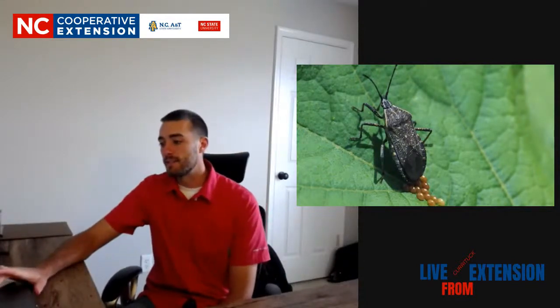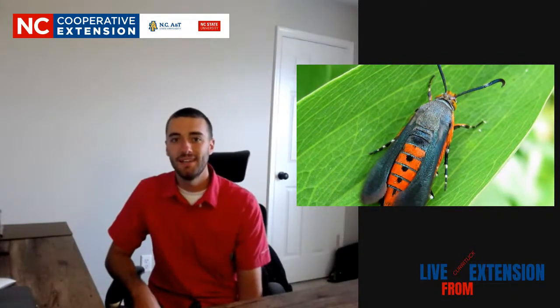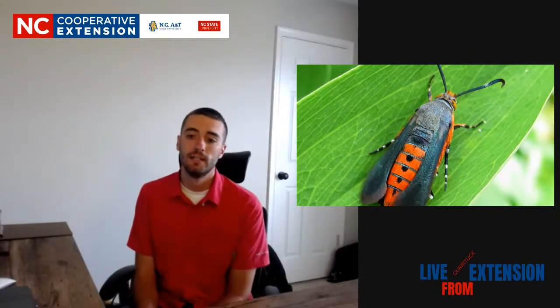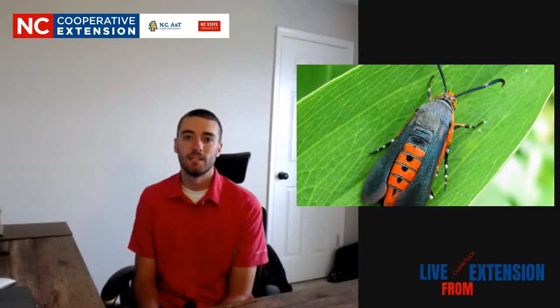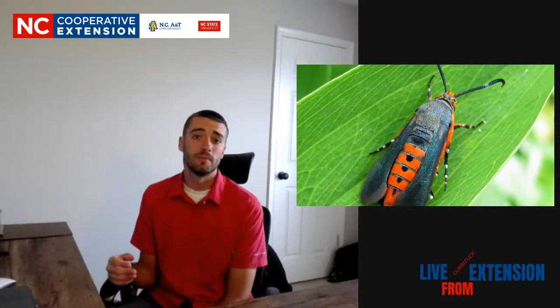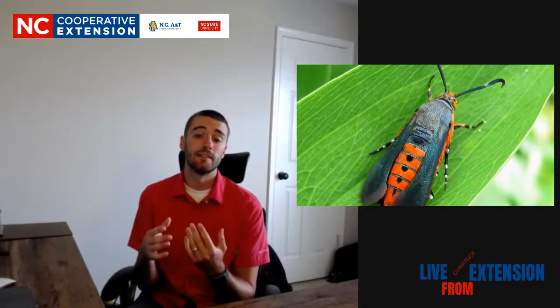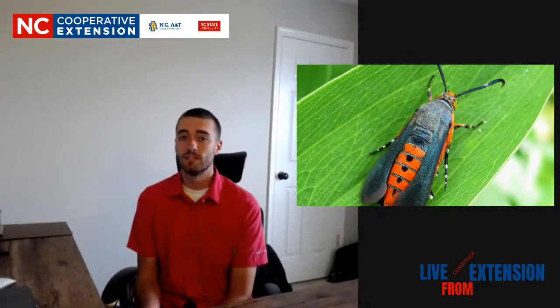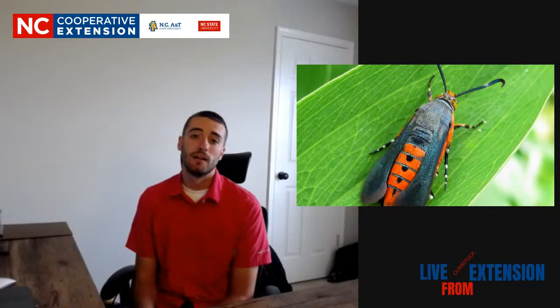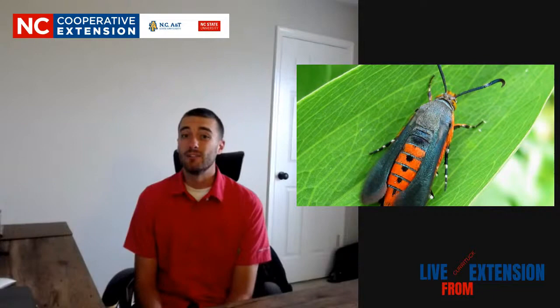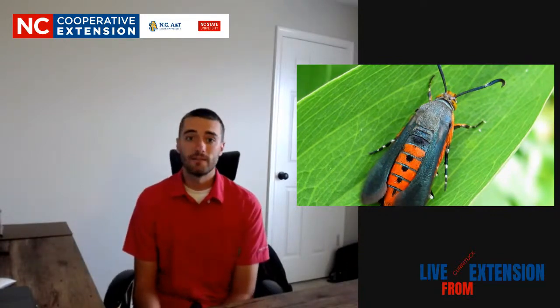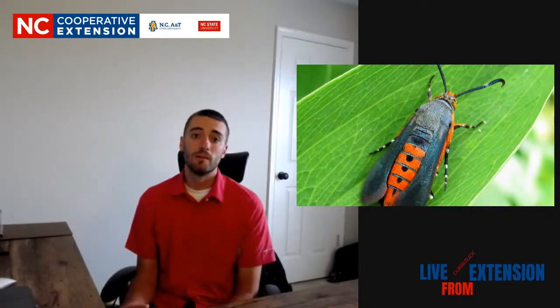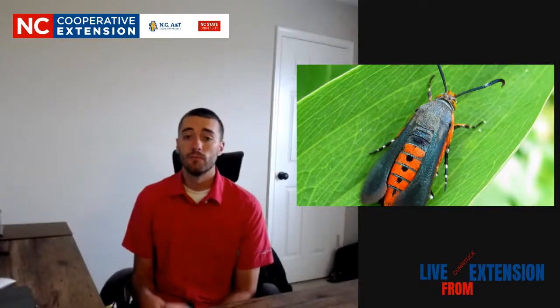Squash vine borer is a real pain — it's a moth that mimics a wasp so nothing will bother it. It's hard to control because it lays eggs at the base of the plant, then the larvae eat into the stem and kill it from inside. You can only control the adults, which is difficult since they fly around and may only appear once a day after damage is done. Row covers give some control. If you start to notice plants deteriorating, remove them to reduce the population in your garden.